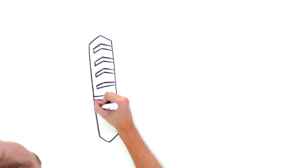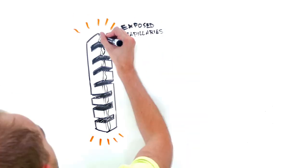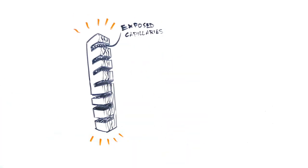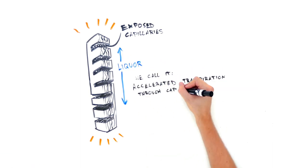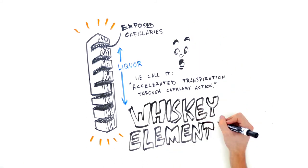We designed a product to take advantage of transpiration through capillary action that provided shorter distance for whiskey to travel through repetitive exposure to the capillaries by cutting it horizontally. We call this process accelerated transpiration through capillary action, and our product is called Whiskey Elements.